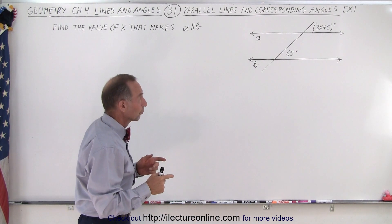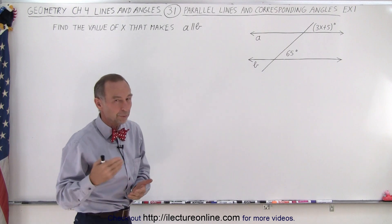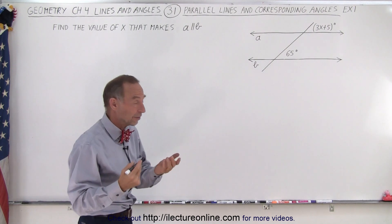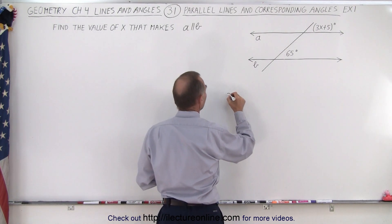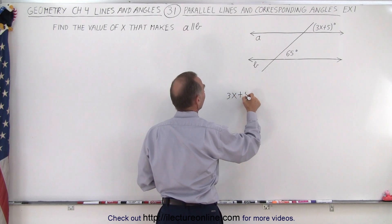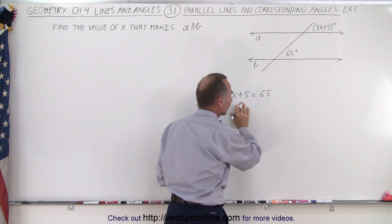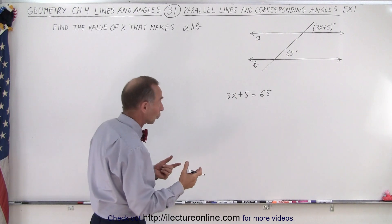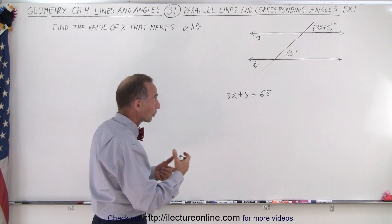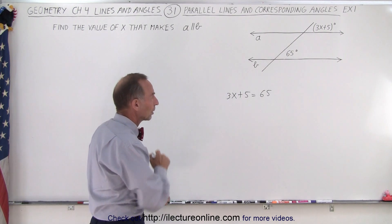So to make the two lines parallel, 3x plus 5 degrees must be equal to 65 degrees. So that's what we're going to write. So we write 3x plus 5 equals 65 and then we solve this for x. And that will ensure that the two angles are congruent and then we know that the two lines are parallel.